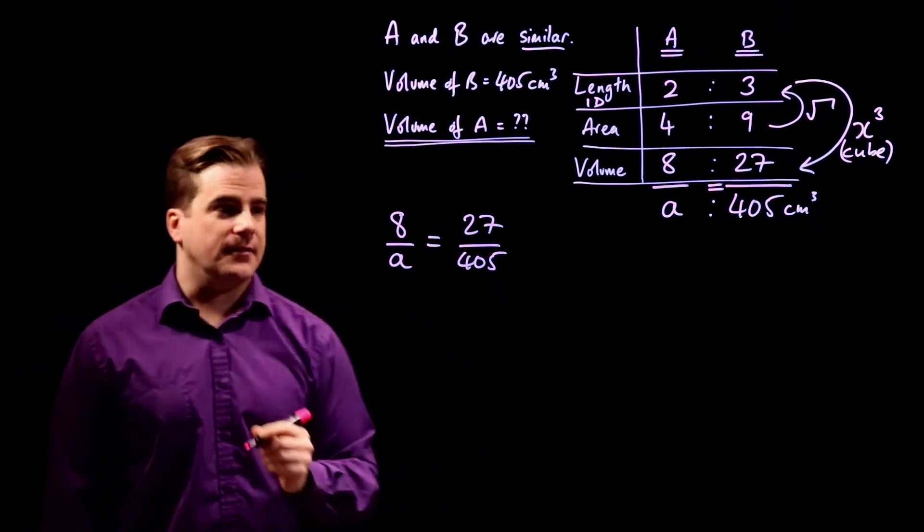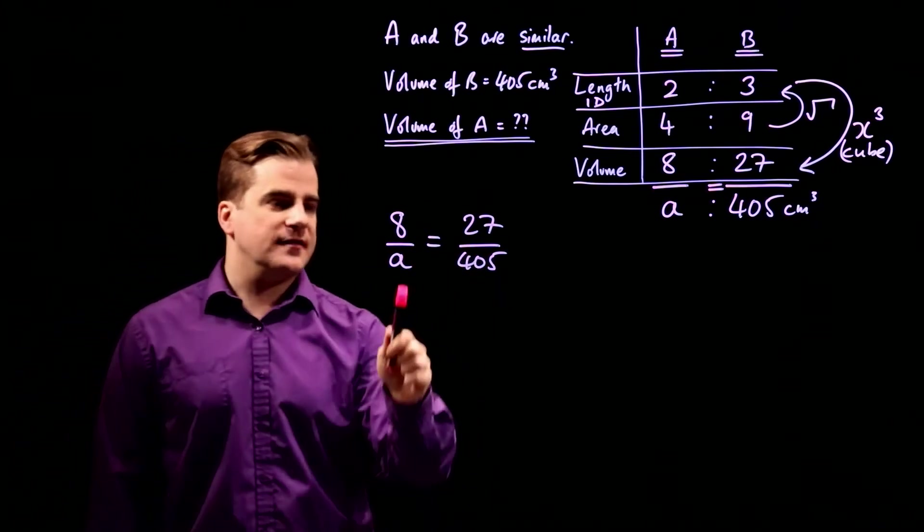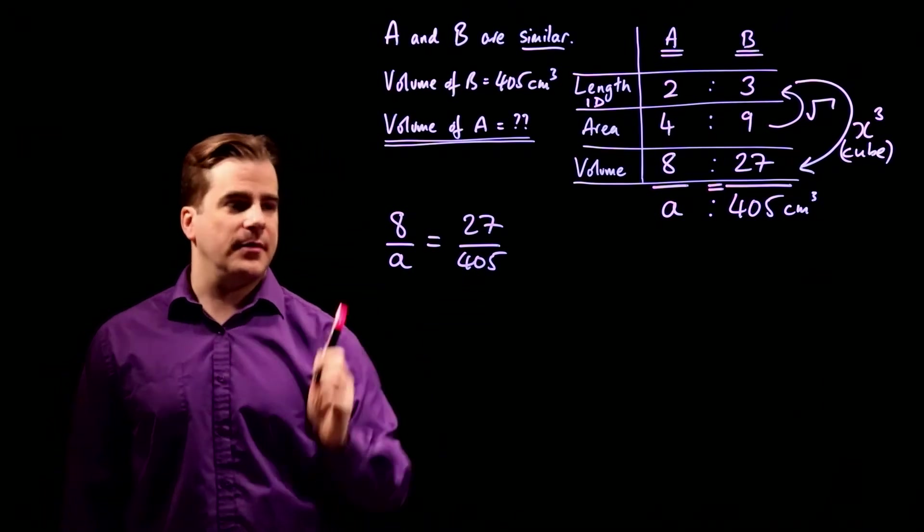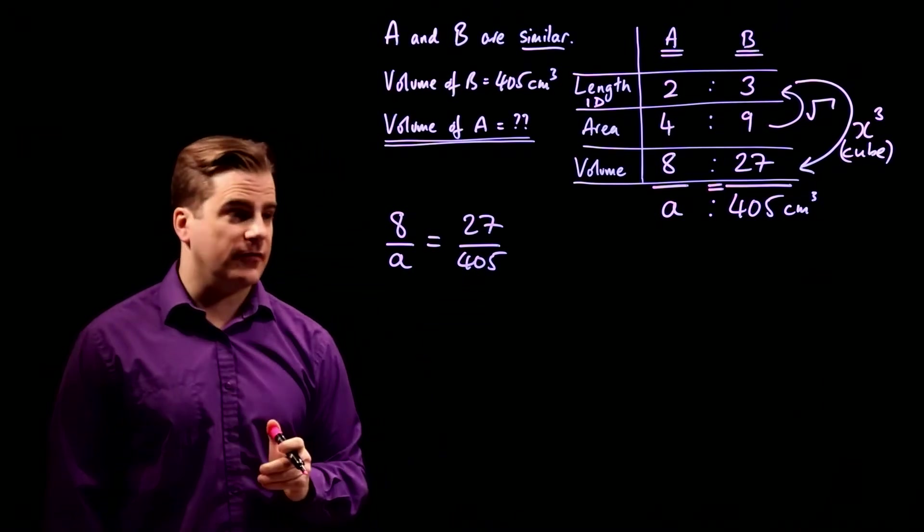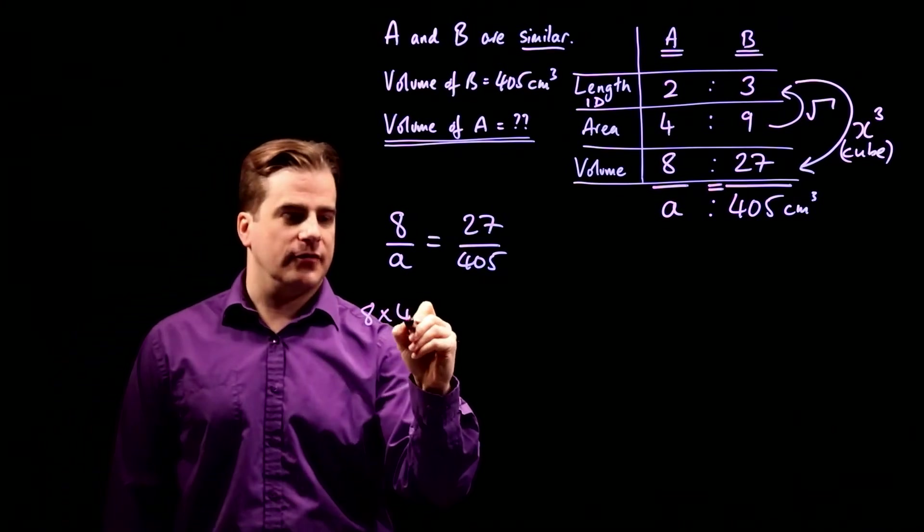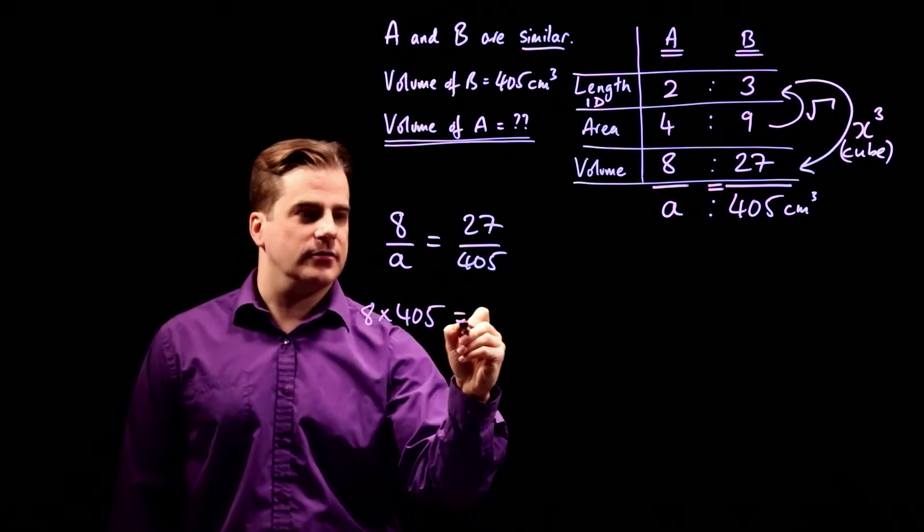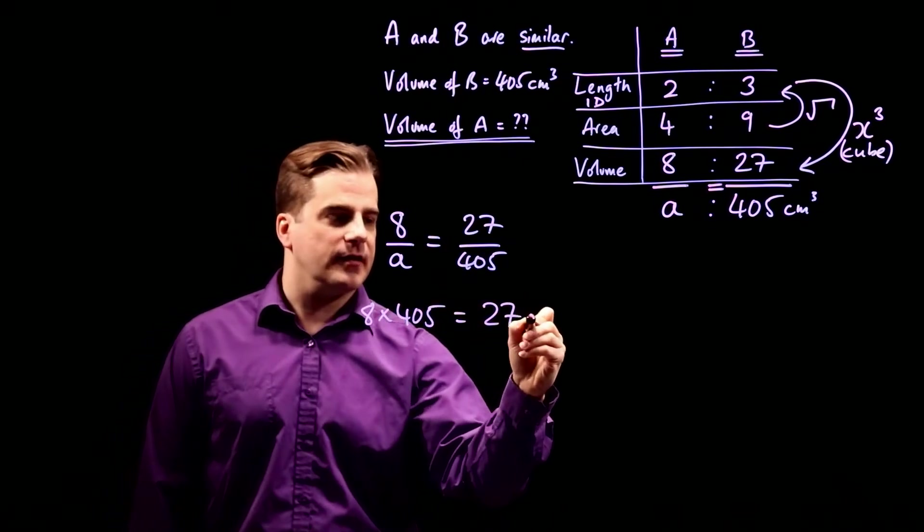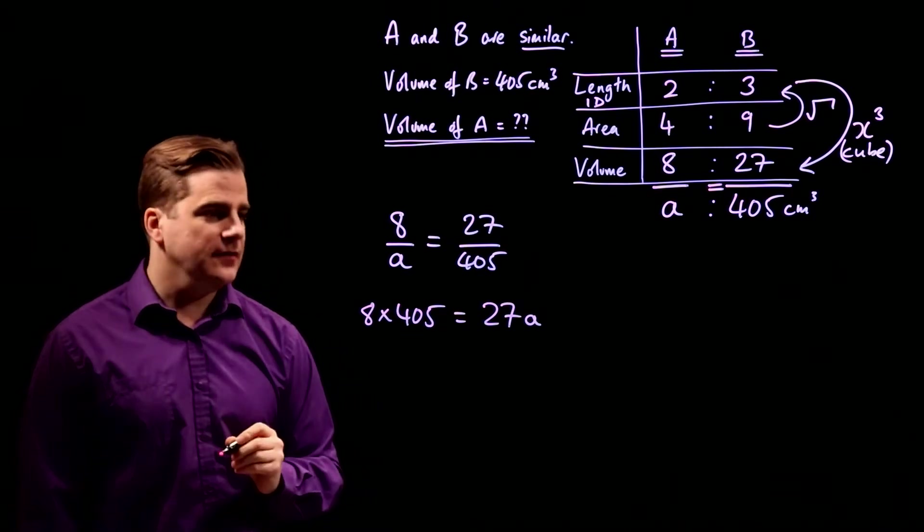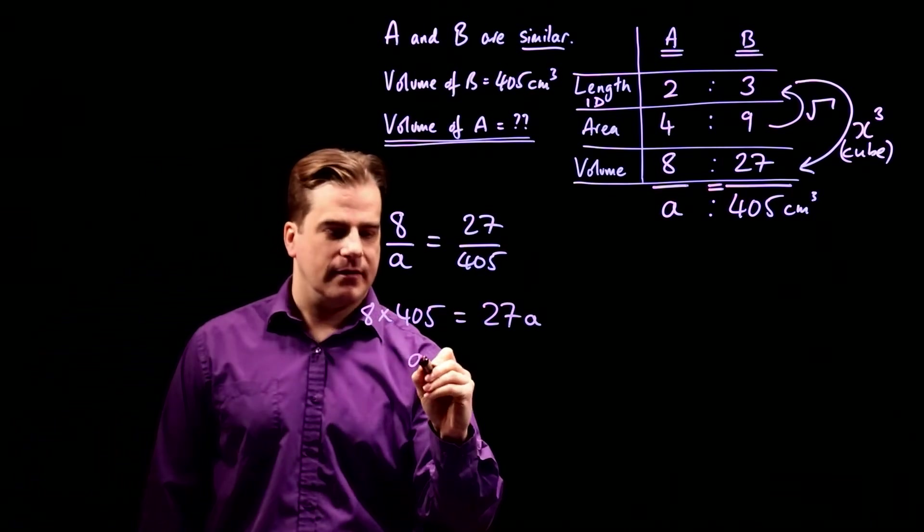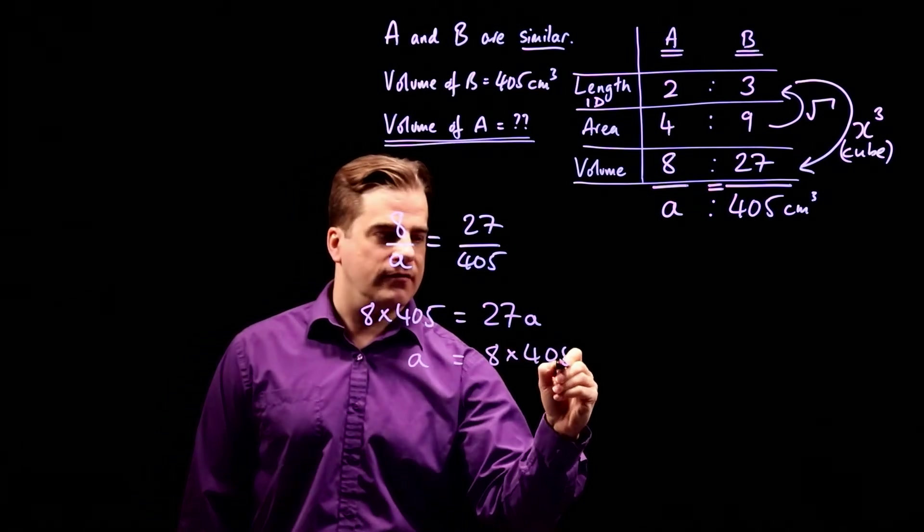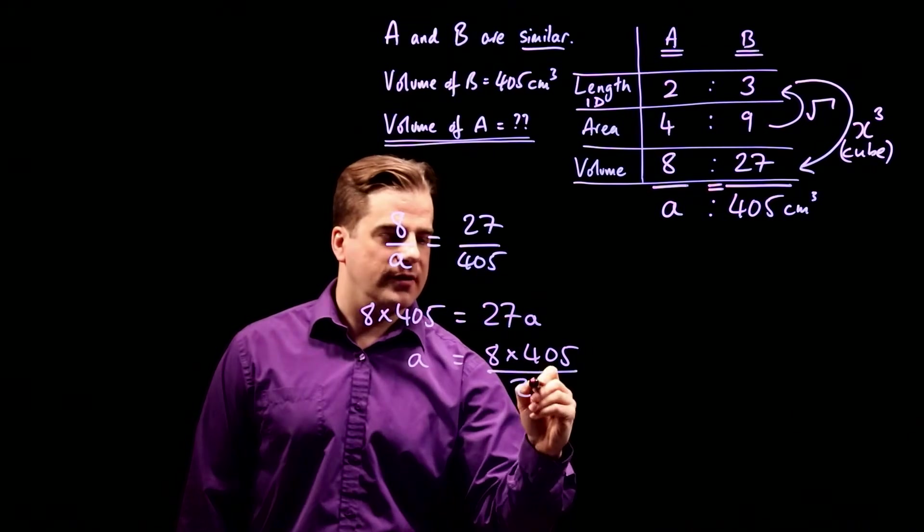Now we just need to solve this and we've got A. So let's bring the A up here, multiply both sides by A, and bring the 405 up here by multiplying both sides by 405. I'll do that all at once. So we get 8 times 405 equals 27 times A. And now we'll divide both sides by 27. So we get A equals 8 times 405 over 27.